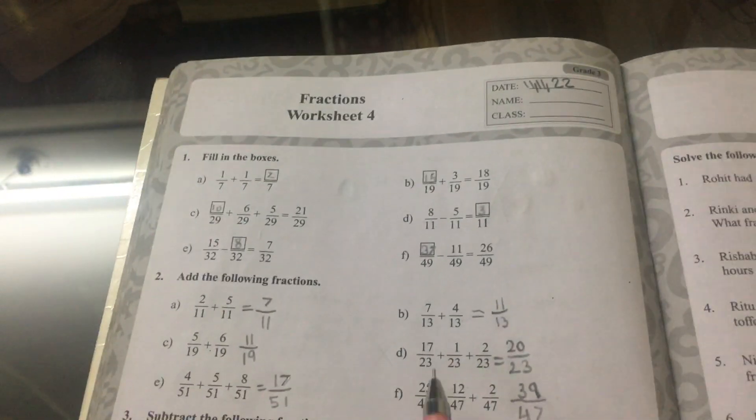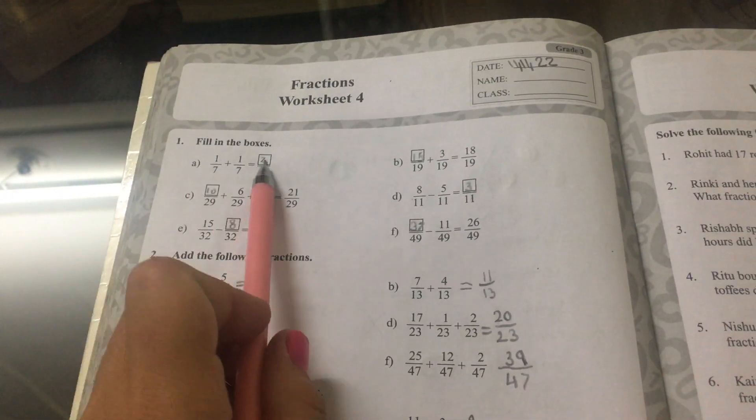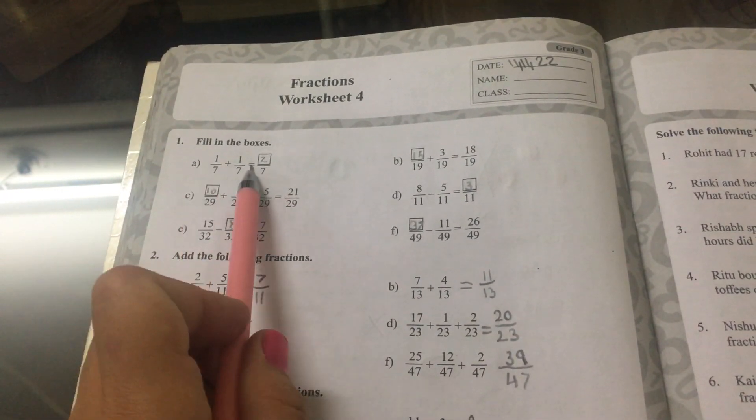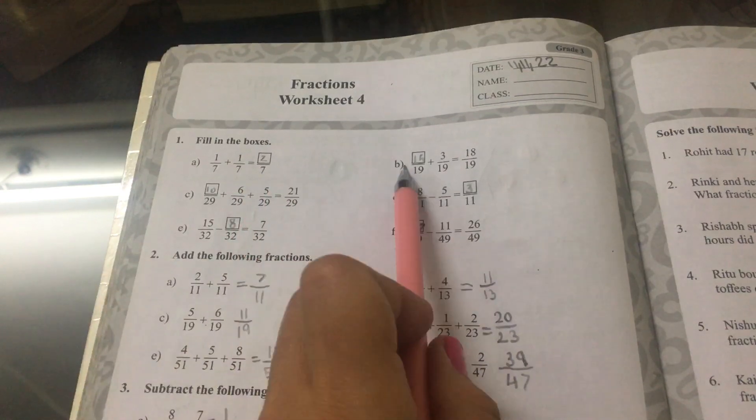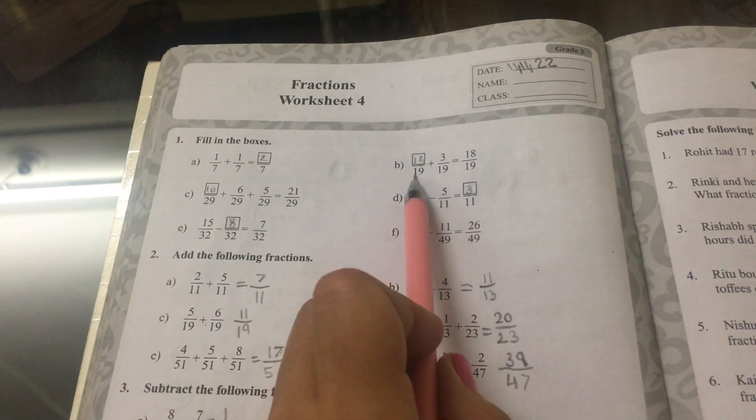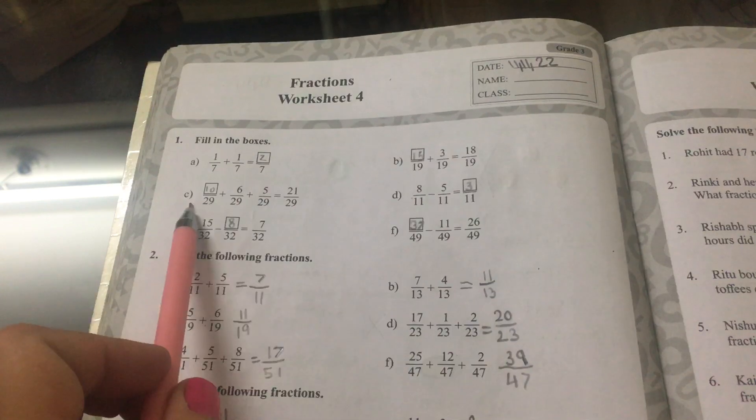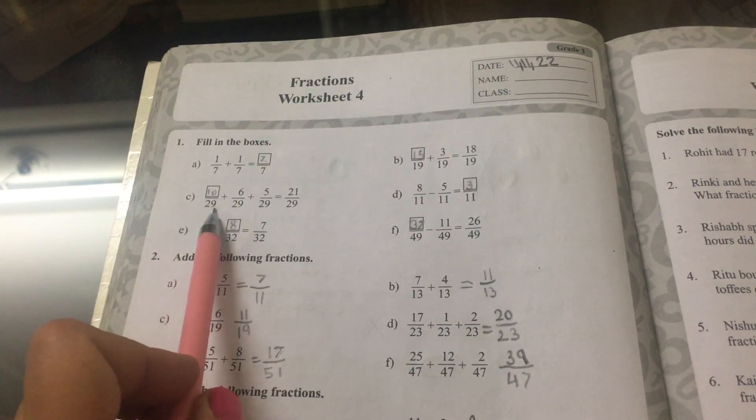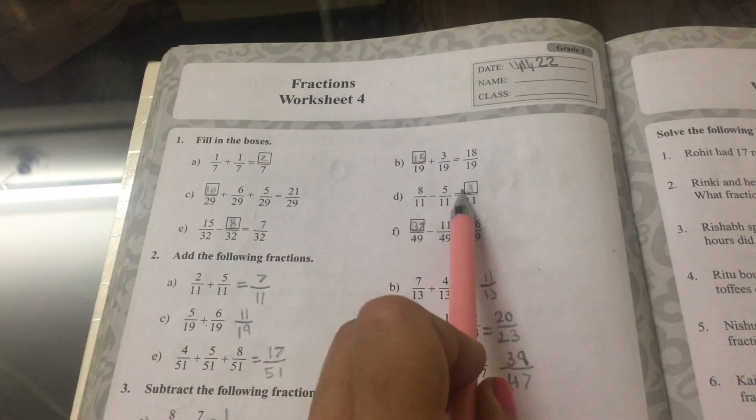Worksheet number 4, fill in the boxes. The answer for A is 2 sevenths. B is 15 nineteenths. C is 10 twenty-ninths.